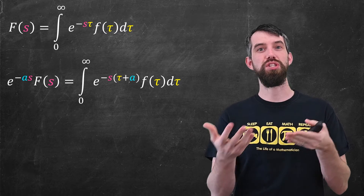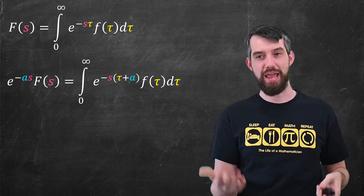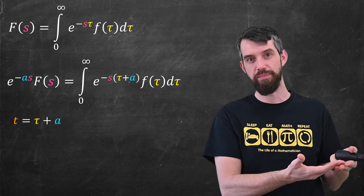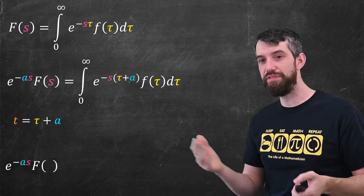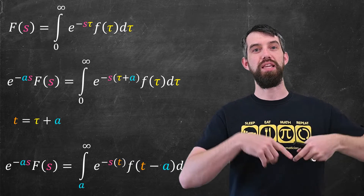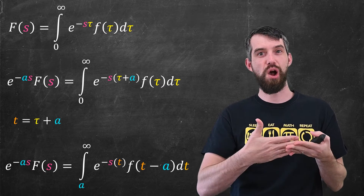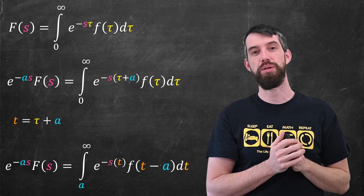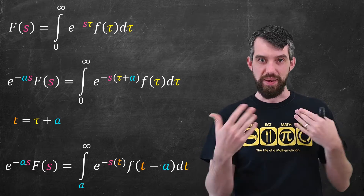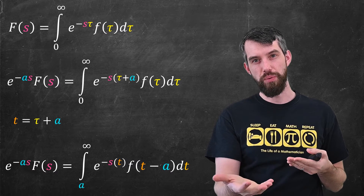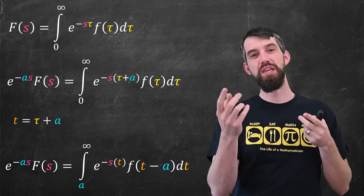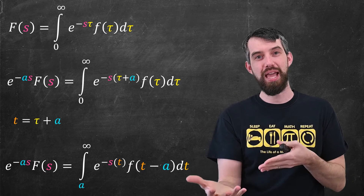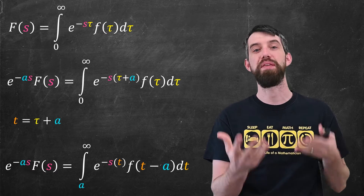Now I'm going to do a change of variables to clean up that exponential. I'm going to take tau plus a and define it to be the new variable, just t. If I plug this in, well, in the limit of integration, if originally tau was zero, then the new t is going to start at a — that's why there's an a at the bottom of the limit of integration. The exponential simplifies to e to the minus s·t. The function of tau turns into a function of t minus a, and d tau equals dt.